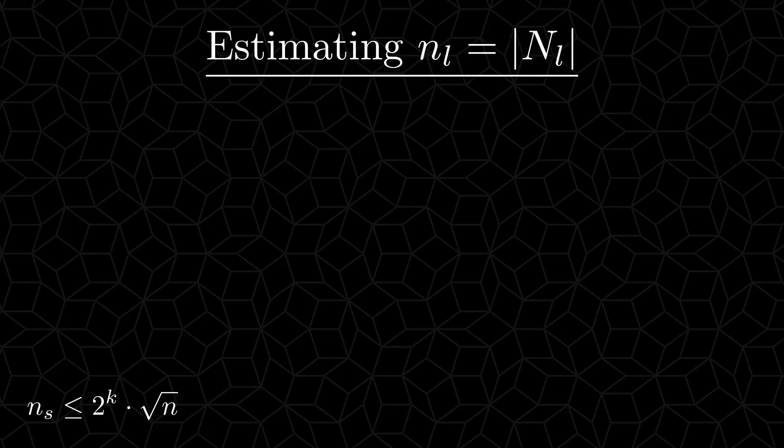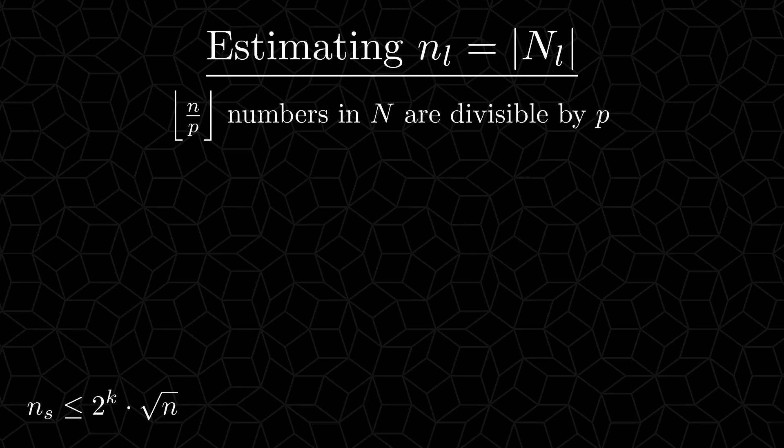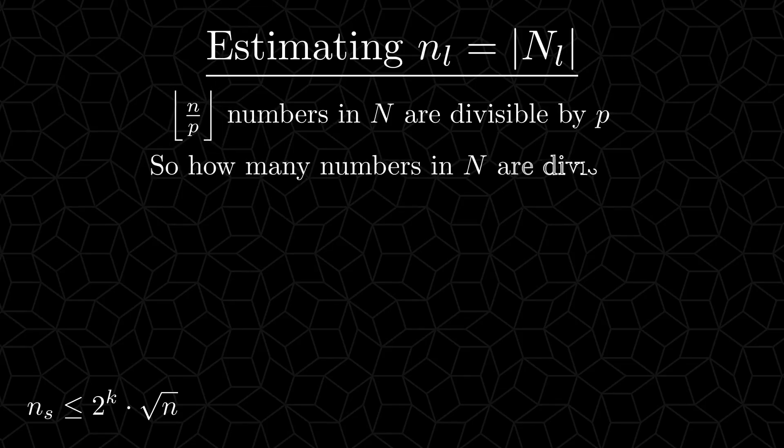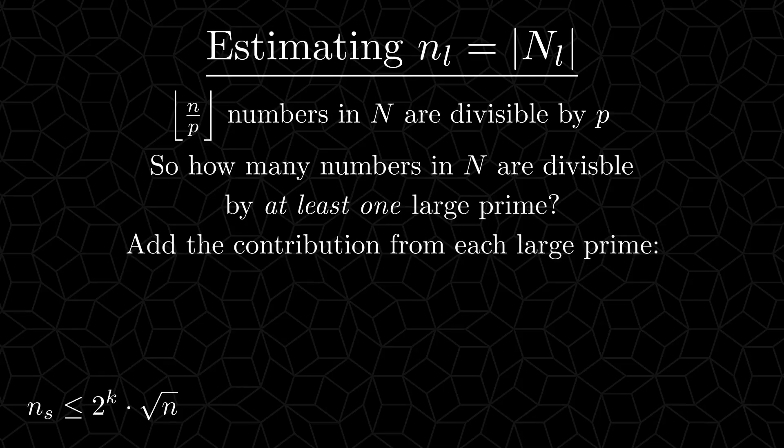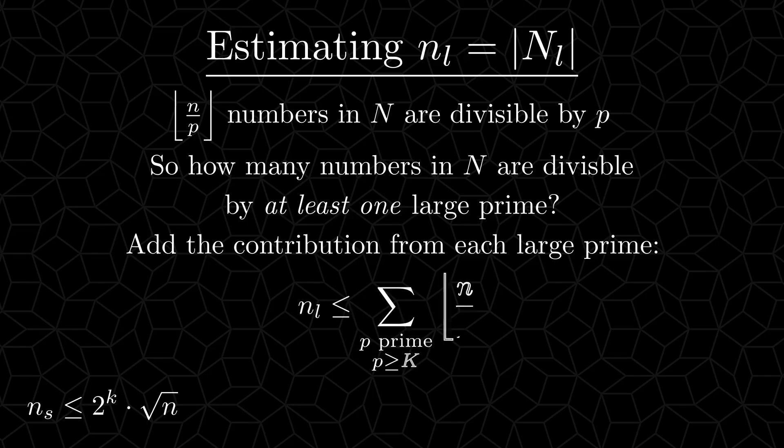And now for the numbers in capital N with at least one large prime factor. Take any prime p, and the number of numbers in capital N that are divisible by this p will be n divided by p, rounded down to the nearest integer. So how many numbers in capital N are divisible by at least one large prime? Well, we can add the contribution from every single large prime. This will possibly overestimate the number of numbers in capital Nl, because the numbers that are divisible by several large primes will be counted several times. This is not a problem. So we get the sum over all the large primes of N divided by p, rounded down to the nearest integer.